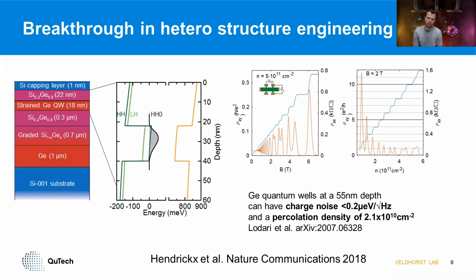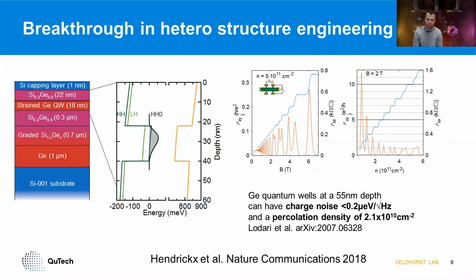Among the first heterostructures realized by Giordano Scappucci, germanium can have very high mobility — even above one million — and by further optimizing the quantum well location we can achieve charge noise values measured in bottom gates that are below the detection limit of our setup, which is below 0.2 μeV²/Hz. The percolation density can also be extremely low, demonstrating the high quality of the heterostructures themselves. This is an ideal starting point to make quantum dot systems.